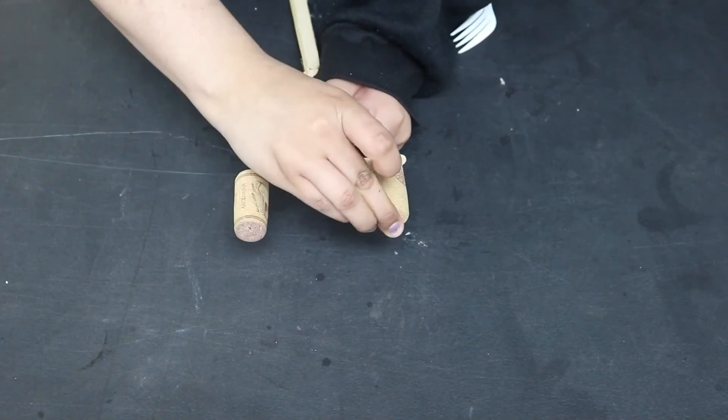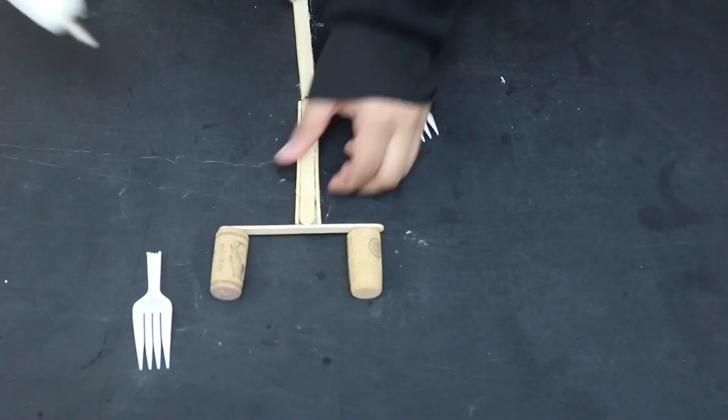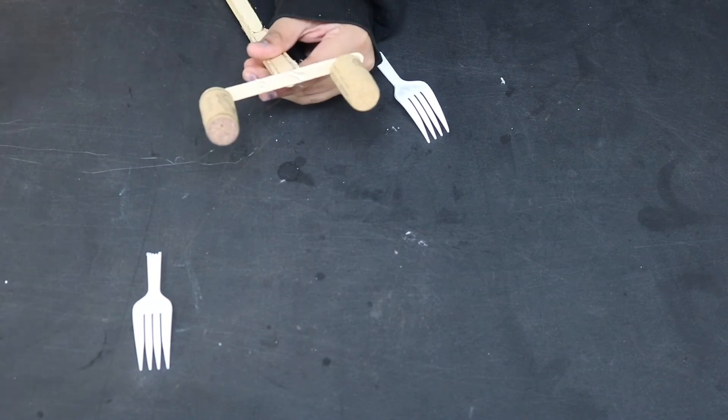Once I cut my forks, I start to glue everything down together. The corks will go at the end of the popsicle stick and my forks will be in the center.